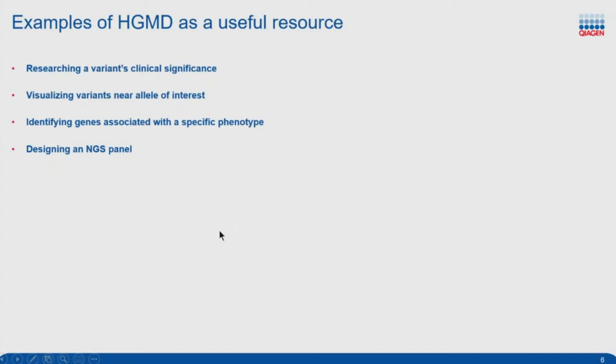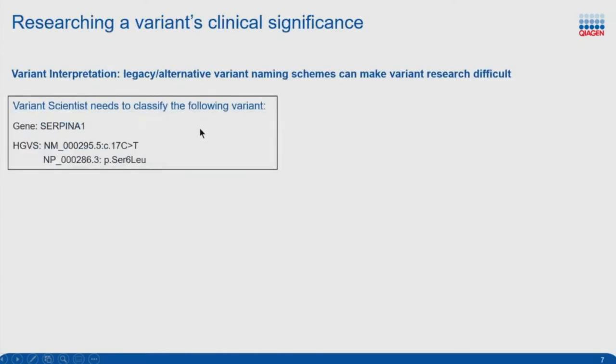Now we're going to look at some examples that illustrate how HGMD is a particularly useful tool during your variant classification workflow. Specifically, we'll look at how convenient HGMD is when researching a variant's clinical significance, ways in which visualizing variants through HGMD can provide information about the allele of interest, ways to identify genes associated with specific phenotypes, and how you can utilize advanced capabilities to design an NGS panel.